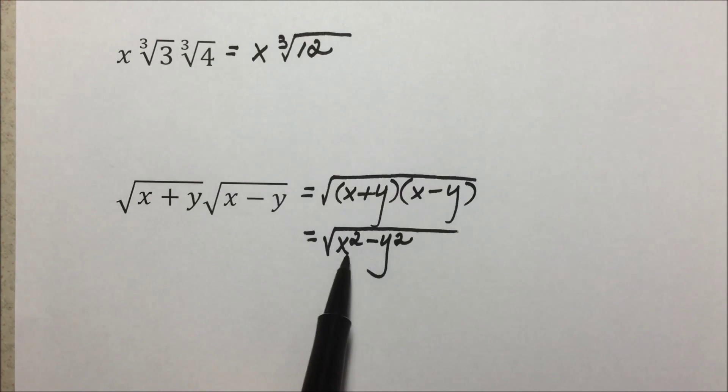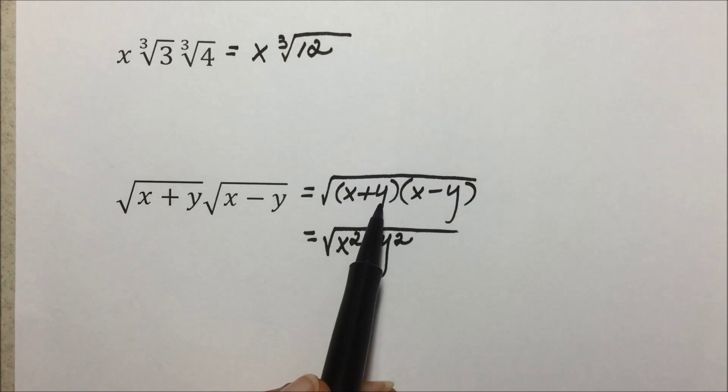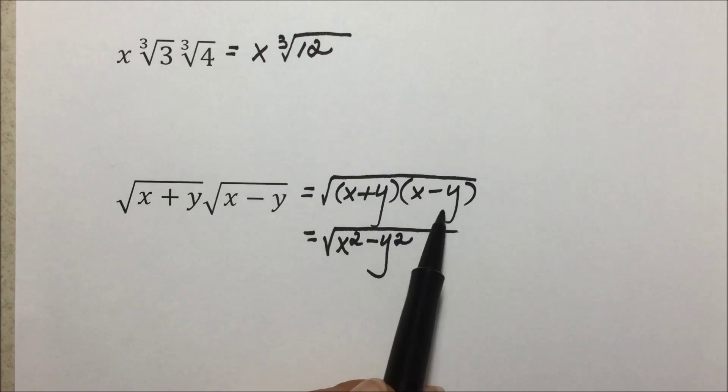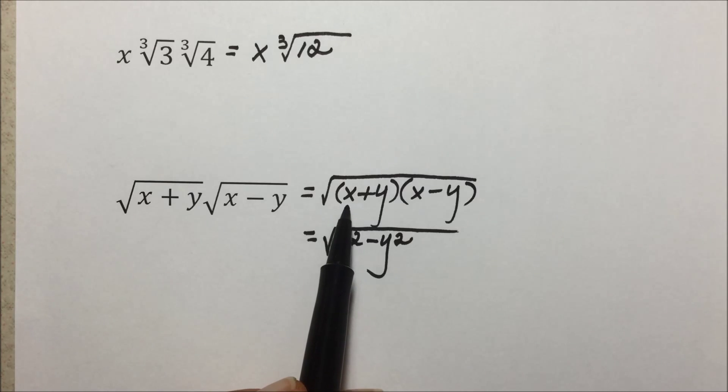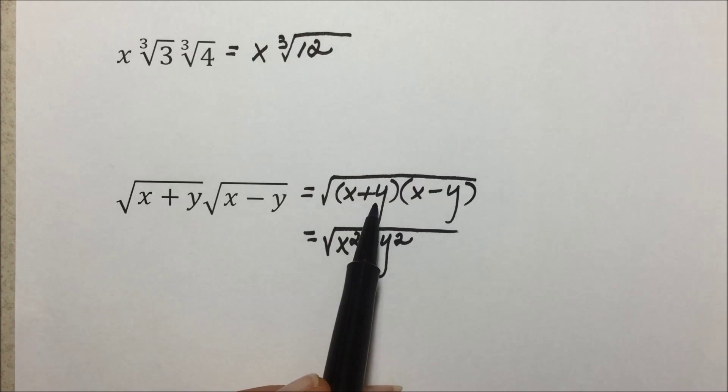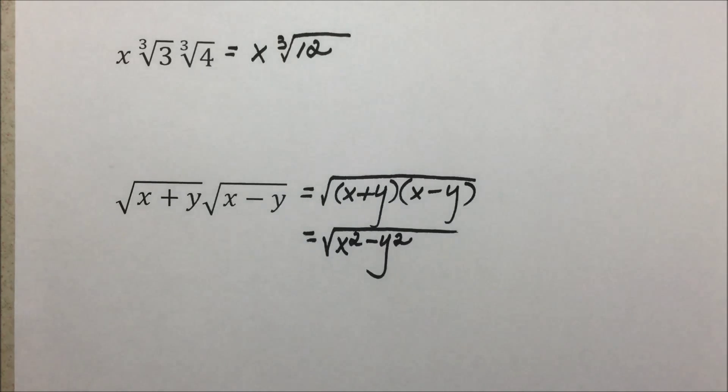We could see prior to doing the multiplication, again, that we do not have the same factor that we could take the square root of. Only if we had, say, x plus y times x plus y could we have simplified this expression.